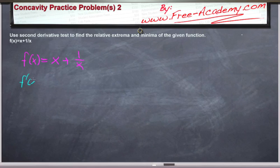First, we're going to need the first derivative because you can't find the second derivative without the first. This is 1 minus 1x to the negative 2, and then the second derivative is going to be equal to positive 2x to the negative 3rd.